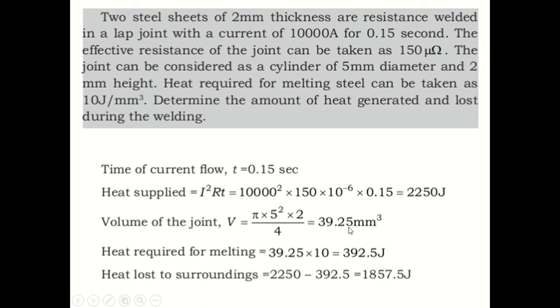The heat required for melting steel is given in per millimeter cube. So if you multiply the volume obtained in the last step - the volume of the joint - with this, you will get exactly the heat required for melting in joules. So 39.25 × 10, you will get 392.5 joules. Now I know heat supplied, I know heat required.